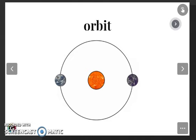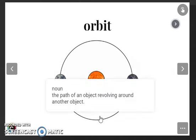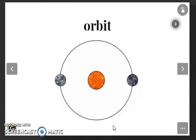Then we have orbit. Listen and repeat: orbit. Okay, in this case orbit is a noun. The path of an object revolving around another object. Here we have it. The orbit is a circle, is this part.